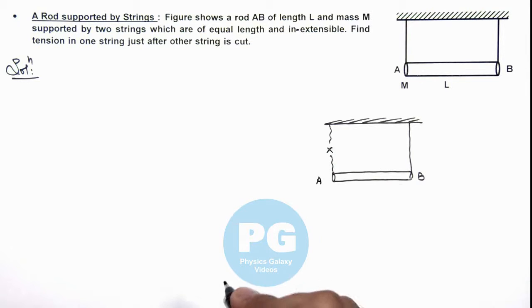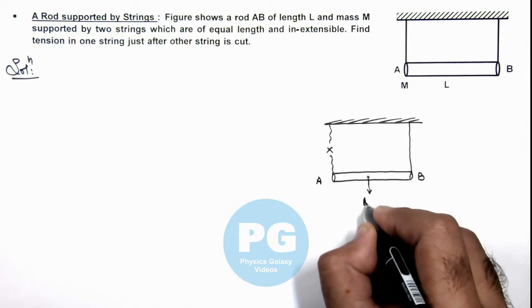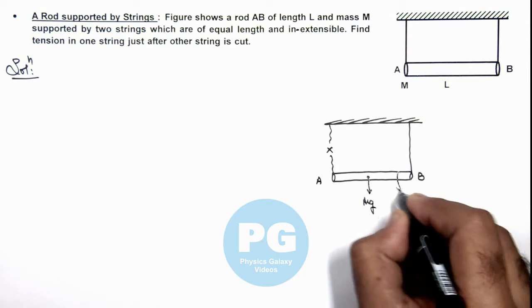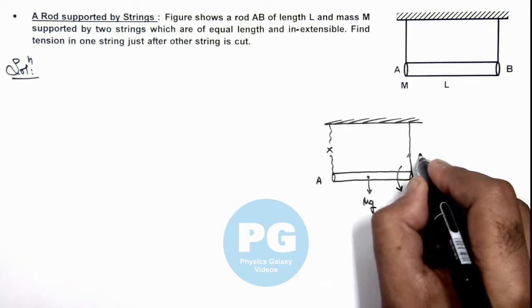So due to this what happens? The weight of the rod will cause a rotational motion in the rod, and a tension in the other string which is remaining is say T.